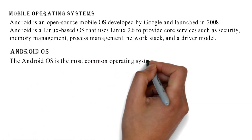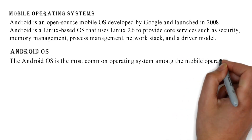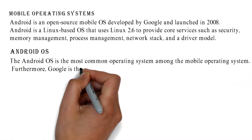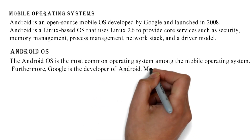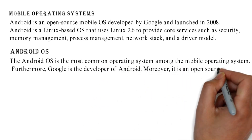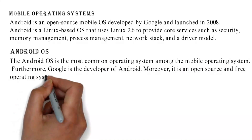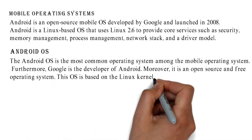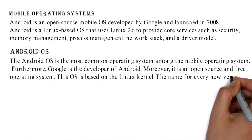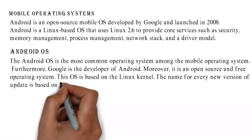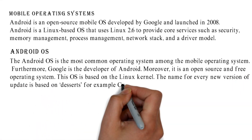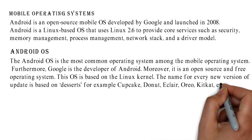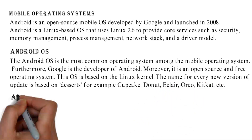The Android OS is the most common operating system among mobile operating systems. Google is the developer of Android. It is an open source and free operating system based on the Linux kernel. The name for every new version or update is based on desserts, for example, Cupcake, Donut, Eclair, Oreo, KitKat, etc.